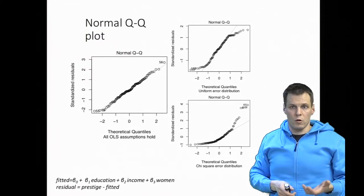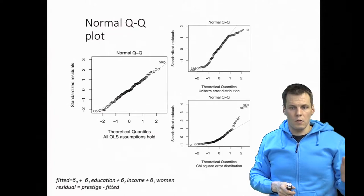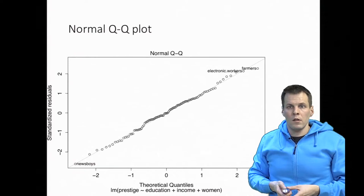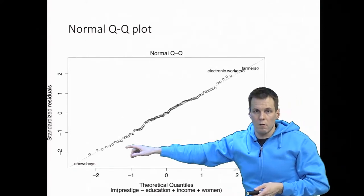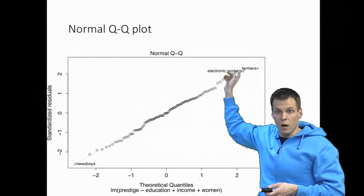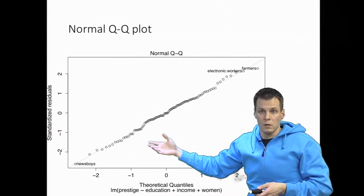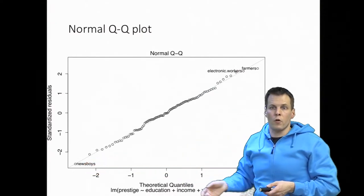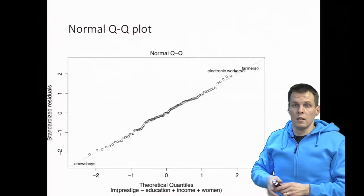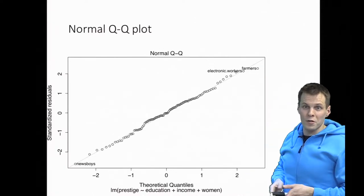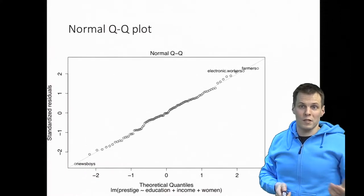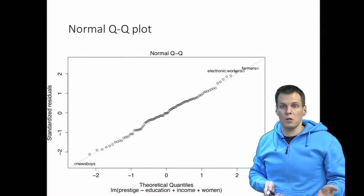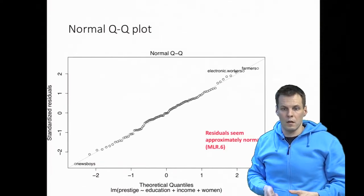While normality of the error term is not the most important assumption in regression analysis, I do this check because it's quick and it identifies outliers and gives me a first look at the data. With the actual data, I can see that the residuals follow a normal distribution, so I'm happy with this — it's an indication of a good-fitting model. R labels possible outliers: newsboys has a large negative residual, meaning newsboys is less prestigious than the model predicts. Farmers are more prestigious than the model predicts — they don't make much money and you don't need high education, but farmers are still appreciated a lot. So normal QQ plot shows residuals are roughly normally distributed — no problems.